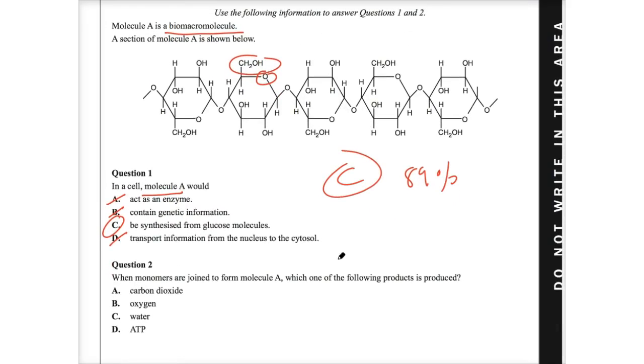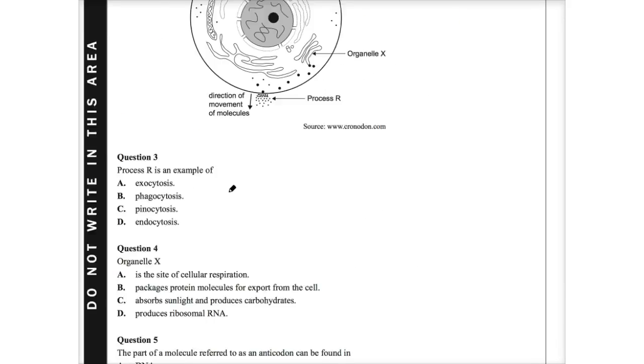Question two. When monomers are joined to form molecule A, which one of the following products is produced? So we're looking for products and we're looking when they're joined. What I know from that is that it's some sort of reaction. If we're joining these two together, it looks like it's going to be a polysaccharide. When you join two monosaccharides together, you form a disaccharide, but you form a disaccharide plus water. The reason why you form water is because this glycosidic bond here, to make it form, you need to get rid of water H2O. And that means here that carbon dioxide, oxygen, and ATP are not correct. And it's water. This is not really that too bad. 68% of the state got that question correct.